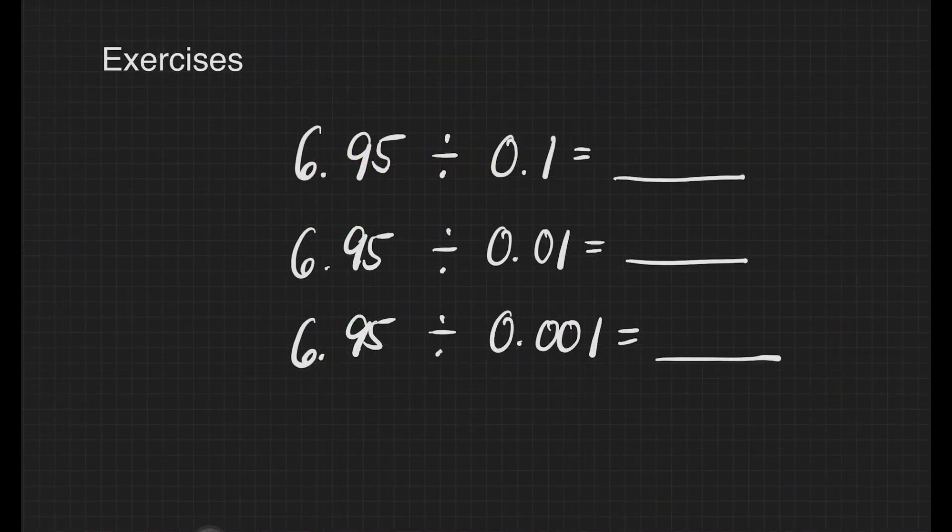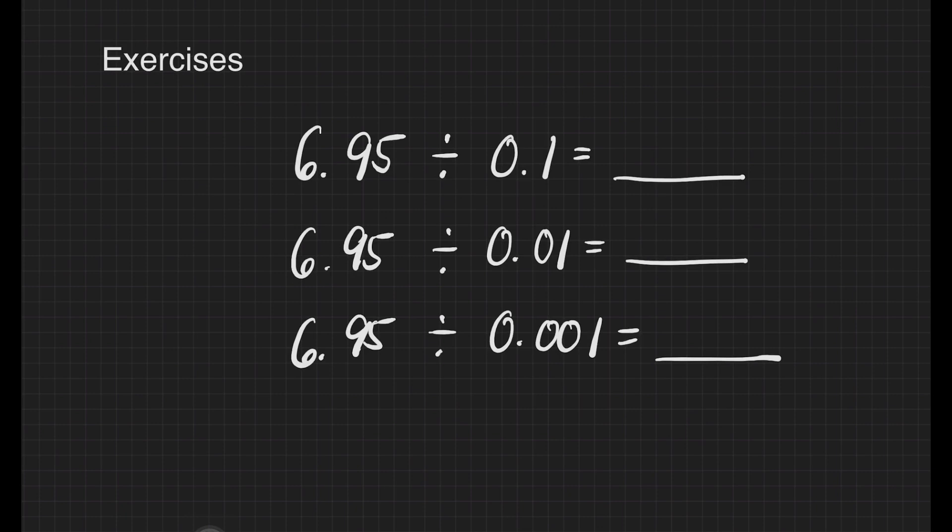We have some exercises here. For the first one, we have 6 and 95 hundredths divided by one-tenth. We will just move one place for both dividend and divisor, and we get 69 and five-tenths.